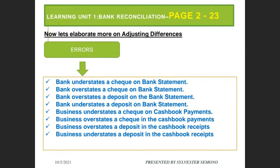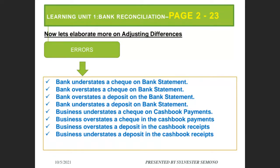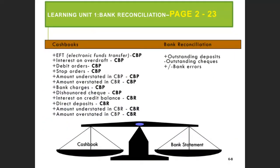The next slide is about errors. I didn't want to show you this before I showed you how to deal with errors. This is all about errors — remember I told you about overstating. I summarized them nicely for you. The bank understated a check on the bank statement — these are the kinds of errors you can find, and you must know where to record. Sometimes we overstate, sometimes we understate; sometimes as a business we make mistakes, sometimes the bank overstates.